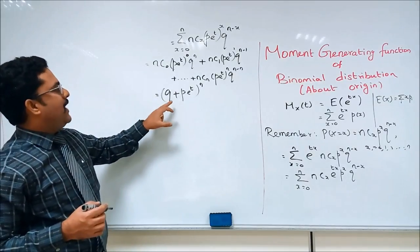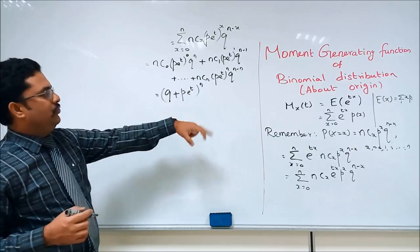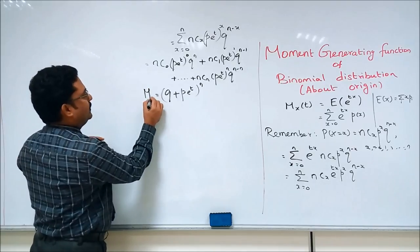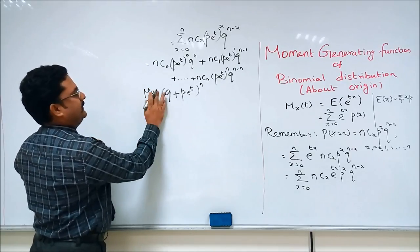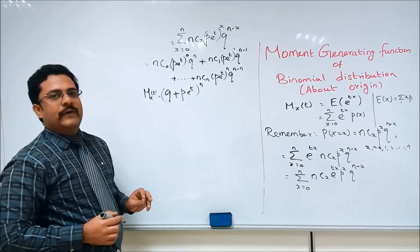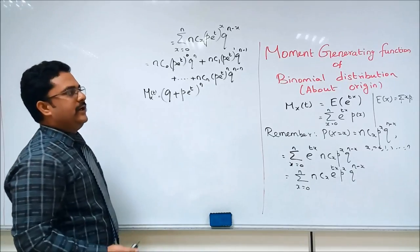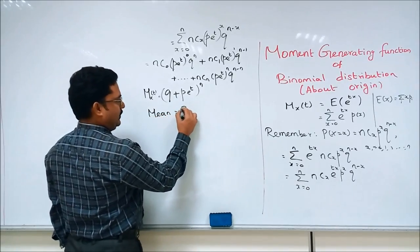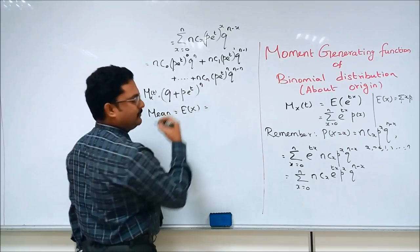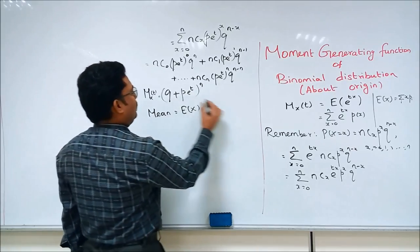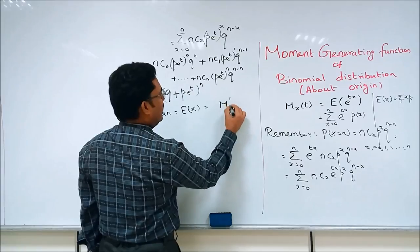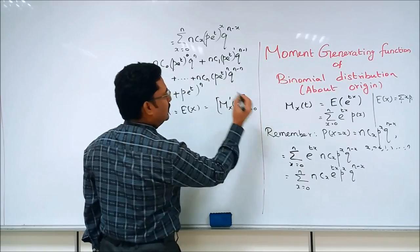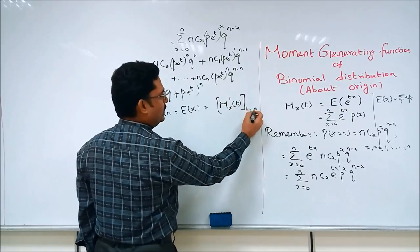This is the Moment Generating Function mx(t) for the binomial distribution: mx(t) = (q + pe^t)^n. Now we have to find the mean and variance. The mean of the binomial distribution is given by the first derivative of our moment generating function evaluated at the point t=0.